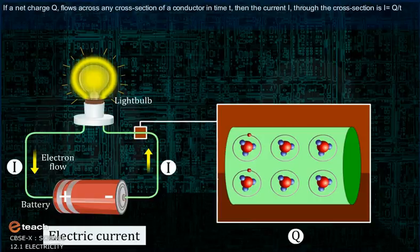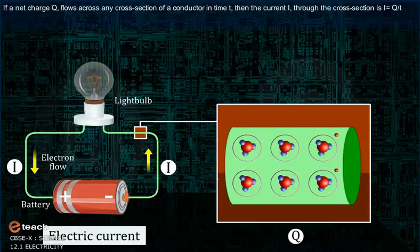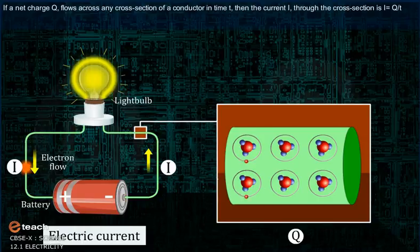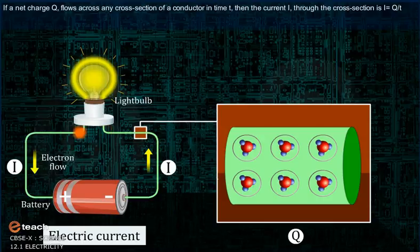If a net charge Q flows across any cross-section of a conductor in time T, then the current I through the cross-section is: I is equal to Q upon T.